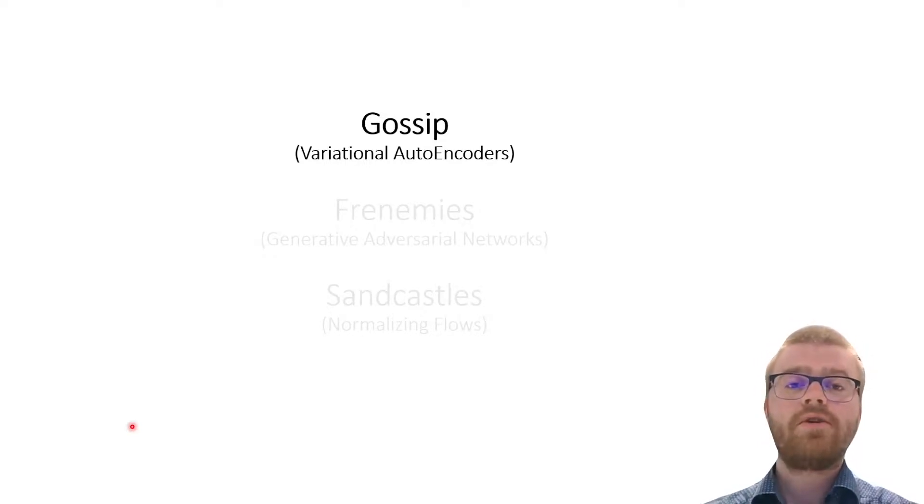Welcome to the second part of the lecture on generative modeling. In this part, I will be discussing variational autoencoders, or as I like to call them, gossip machines.